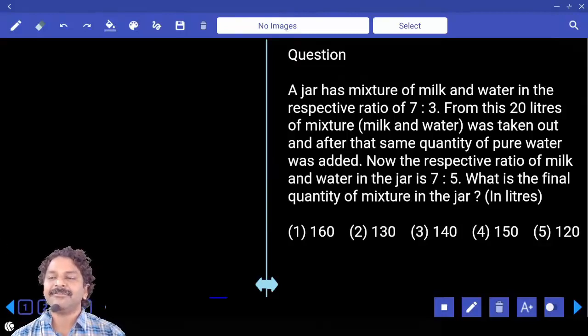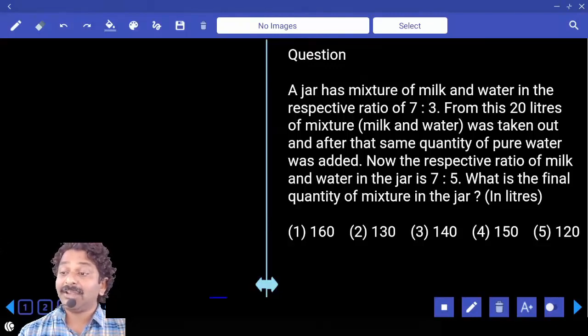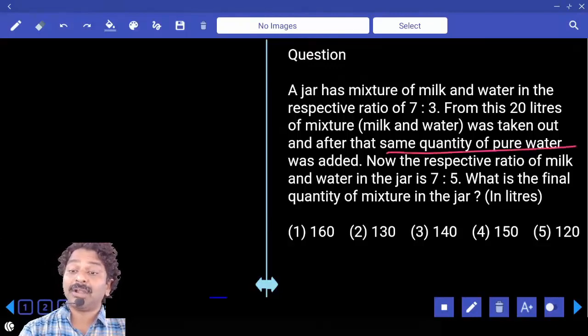A jar has a mixture of milk and water in the respective ratio 7:3. From this, 20 liters of mixture was taken out, and after that, the same quantity of pure water was added.